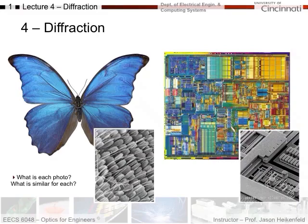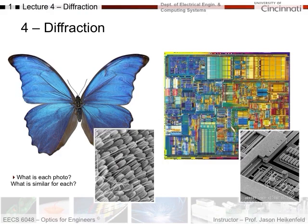We're moving right along in this course on to diffraction, which will build upon what we learned last week for optical interference. We've got a couple of photos to warm us up here today. The question is: what's similar for each of these photos? You have a butterfly and a zoom in of the wings, a computer chip and a zoom in of the electronic wiring. Both of these have brilliant color, and that color comes from having very small features with periodicity, which gives us optical diffraction.